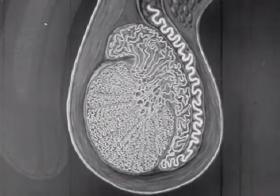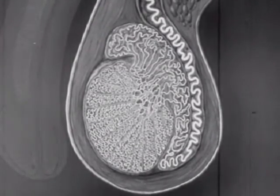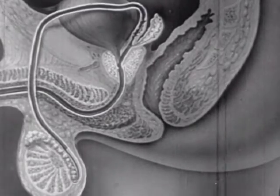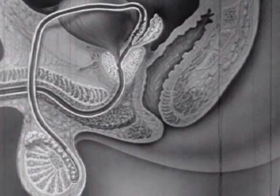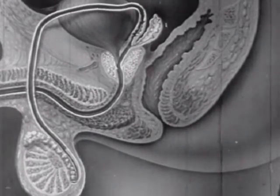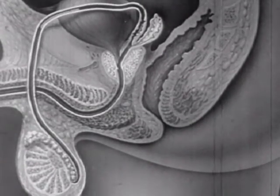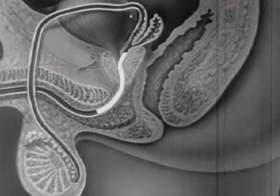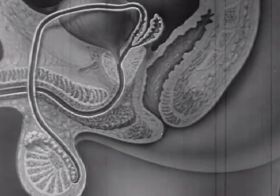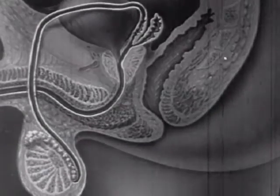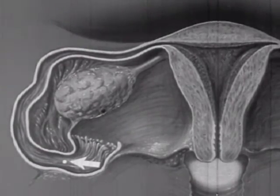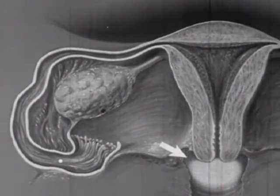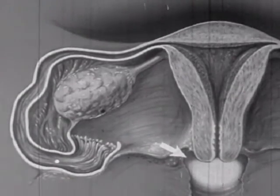Millions of spermatozoa are stored, ready for ejaculation. During intercourse, the penis is in a state of erection, caused by the spongy tissues of the penis becoming engorged with blood. The sperm passes up through the ducts where fluids from the glands are added to form the semen. The semen then flows through the urethral canal and is deposited into the female vagina. We return now to the female organs, with the egg slowly moving through the tube. Male sperm are deposited at the upper end of the vagina, near the cervix.